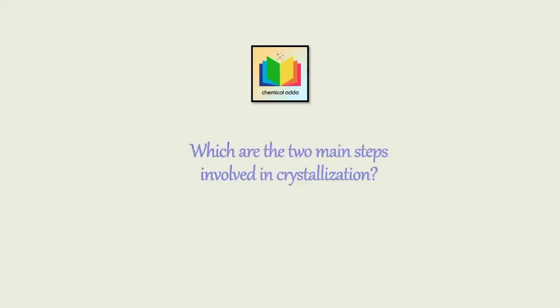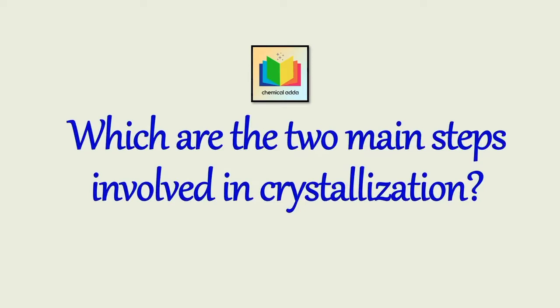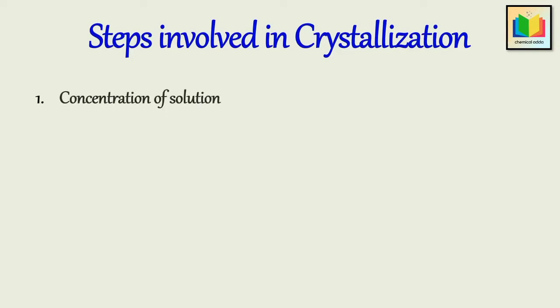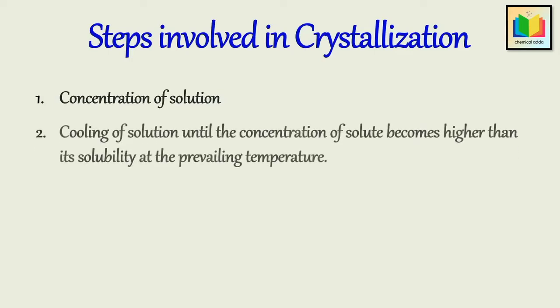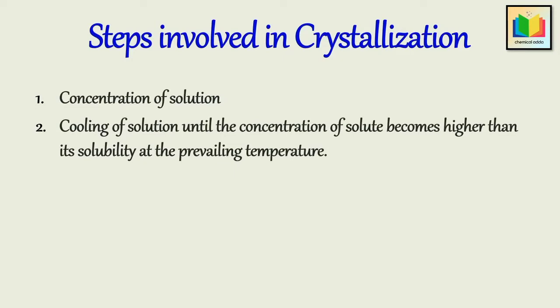Next question: Which are the two main steps involved in crystallization? There are two main steps. The first step is concentration of a solution by evaporating a part of the solvent. And the second step is cooling of the solution until the concentration of solute becomes higher than its solubility at the prevailing temperature. Hence in both methods, the solute then comes out of the solution — that is, precipitates — in the form of pure crystals.